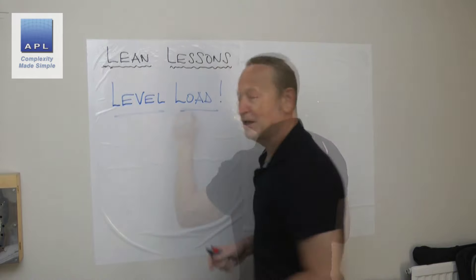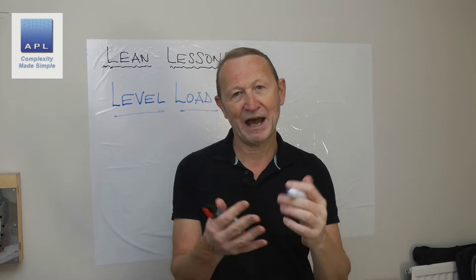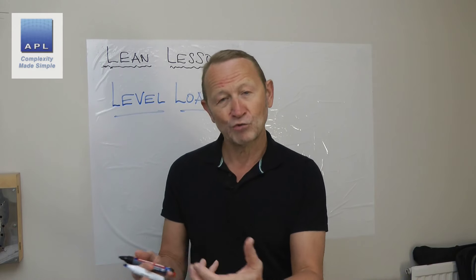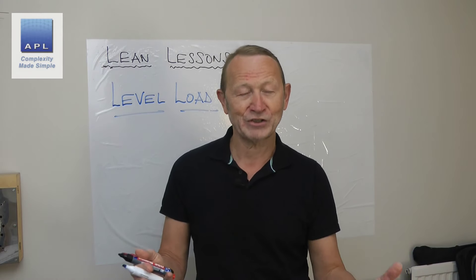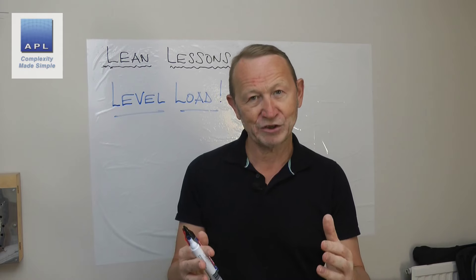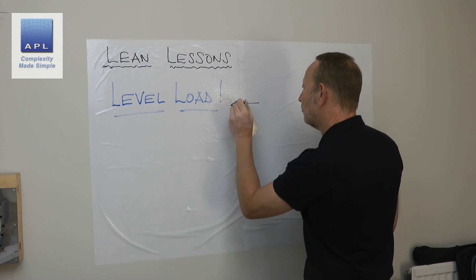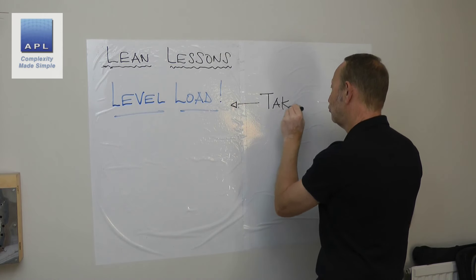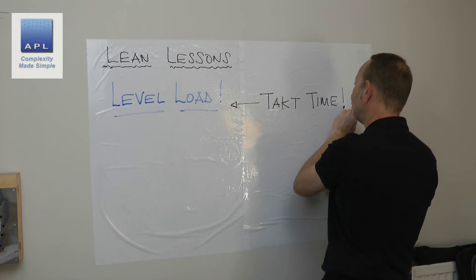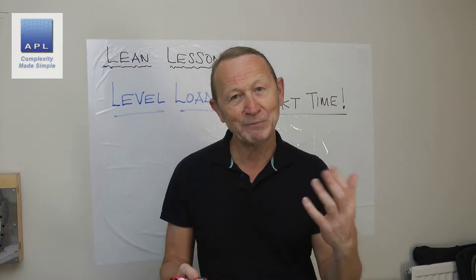Lean Lesson One is: level the load. Take the variability out of your processes. Whether you're dealing with services or real products, you're going to have to make a forecast and deal with the reality of what's going on. The easiest way to do that is to tune in to the market rate — the market demand. What is the real market demand? Tune to the takt time, and it simply means this.